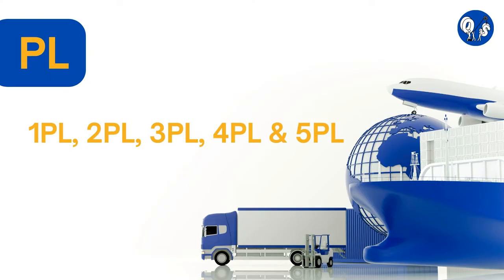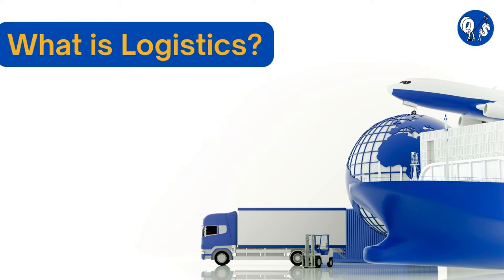Before we dive into the actual discussion of 1PL, 2PL, 3PL and onwards, let's get familiar with the definition of logistics. Logistics is an aspect of the supply chain that stores or delivers finished goods or services to the customer, whether that's a manufacturer, distributor, or consumer. The goal of logistics is to deliver goods or services to the customer on time and at a competitive price.